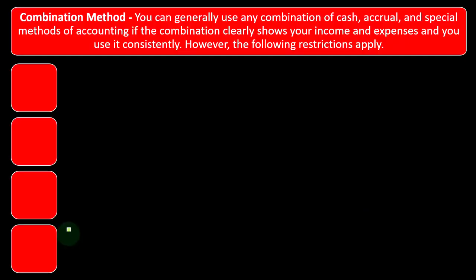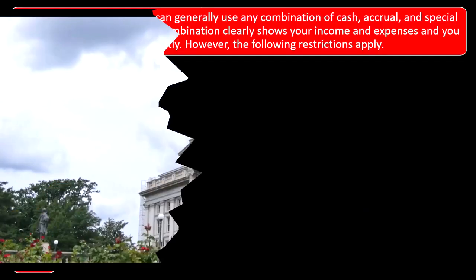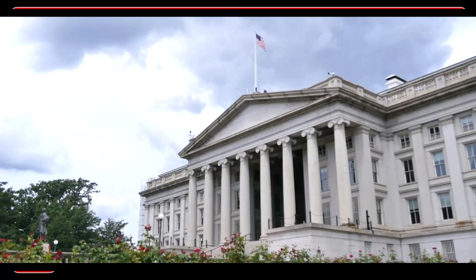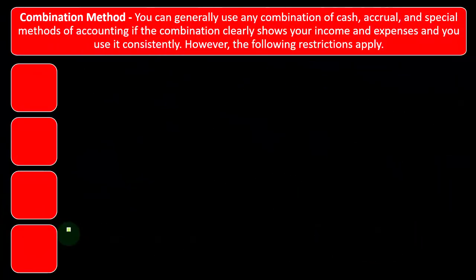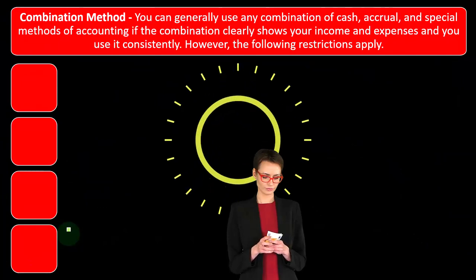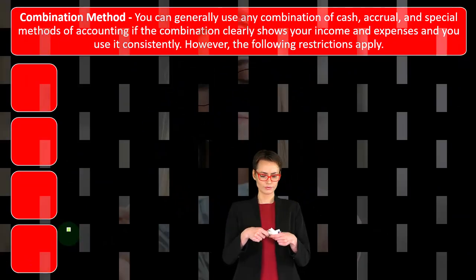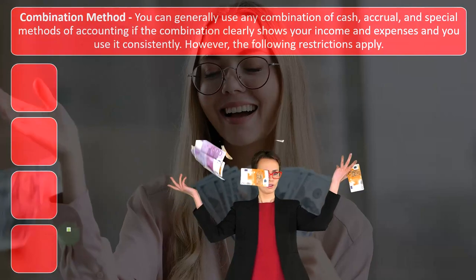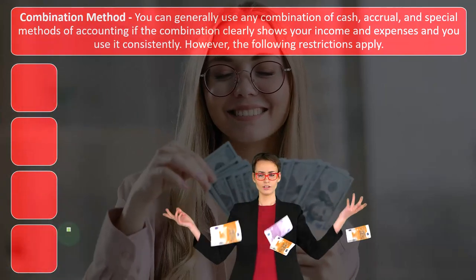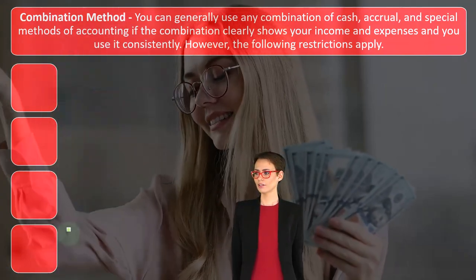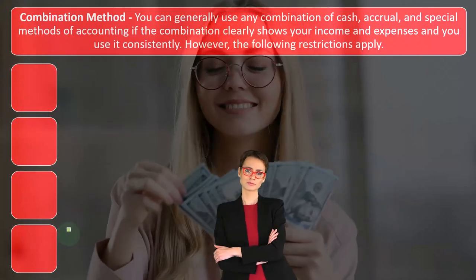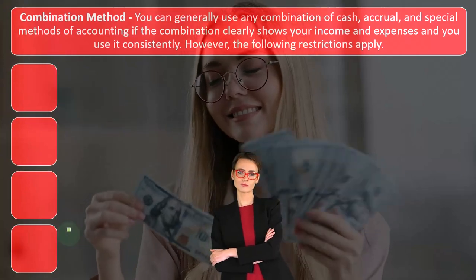There are some circumstances where the IRS might require an accrual method in certain cases. You can generally use a combination of cash, accrual, and special methods of accounting if the combination clearly shows your income and expenses and you use it consistently. Consistency is the key component here.